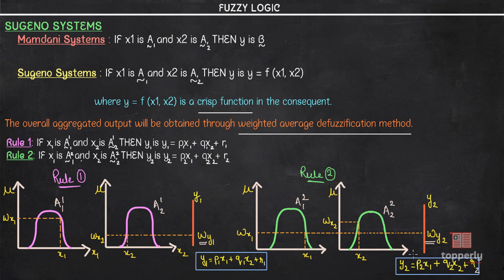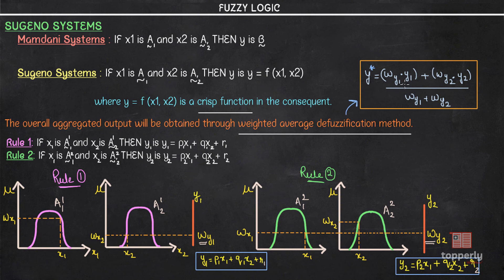Now that we've obtained the membership values for y1 and y2, we can directly apply the weighted average method to get the defuzzified value y*. That is, y* = (wy1·y1 + wy2·y2) / (wy1 + wy2), where wy1 and wy2 are the corresponding membership values of y1 and y2, and y1 = p1·x1 + q1·x2 + r1 and y2 = p2·x1 + q2·x2 + r2. Let me take a solved example so you can understand this better.